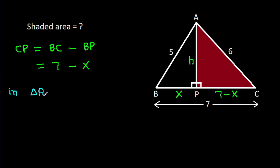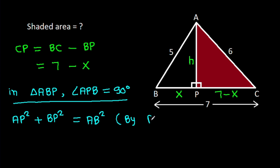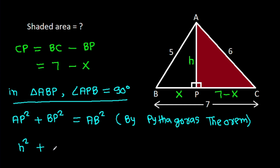In triangle ABP, angle APB is 90 degrees. So by Pythagoras theorem, AP squared plus BP squared equals AB squared. That is H squared minus X squared equals 5 squared, which is 25.